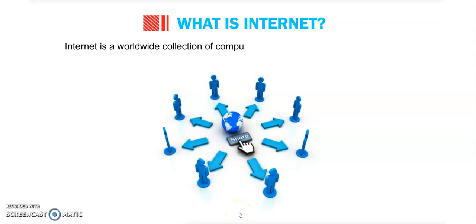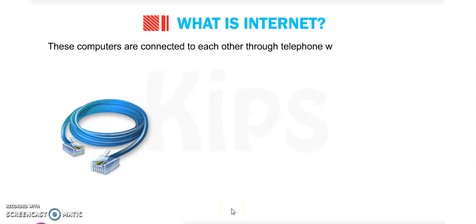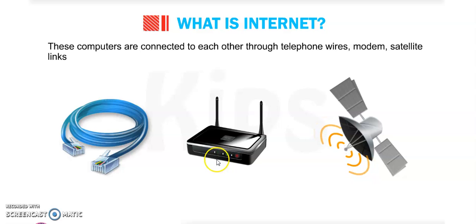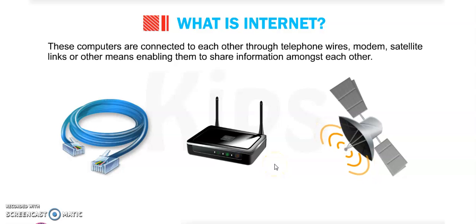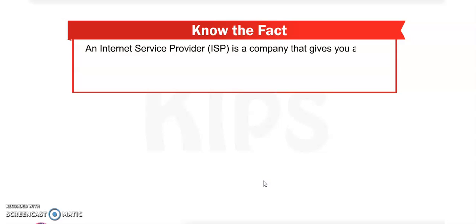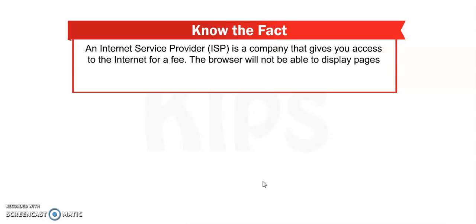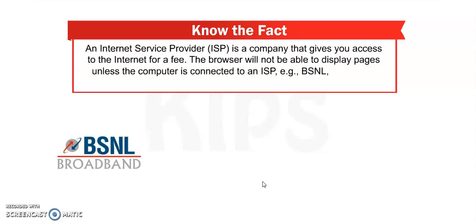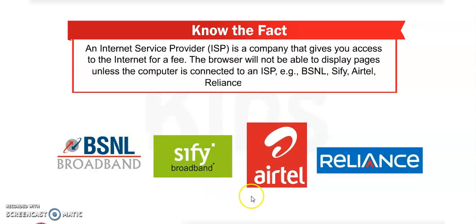Internet is a worldwide collection of computers used to share information among each other. These computers are connected to each other through telephone wires, modem, satellite links, or other means enabling them to share information. Note: An Internet Service Provider, or ISP, is a company that gives you access to the internet for a fee. The browser will not be able to display pages unless the computer is connected to an ISP like BSNL, CP, ATL, Reliance, etc.